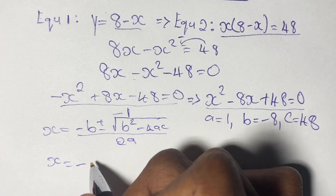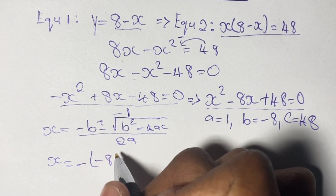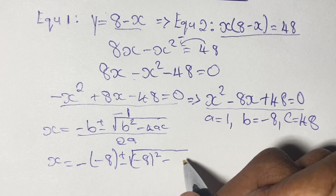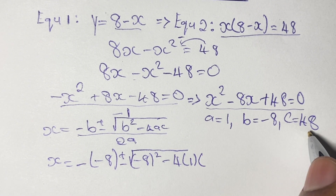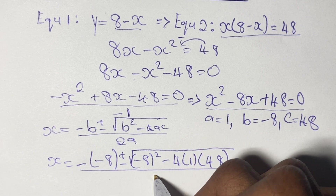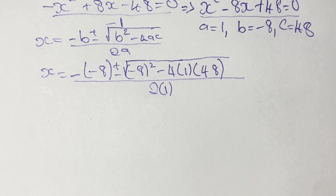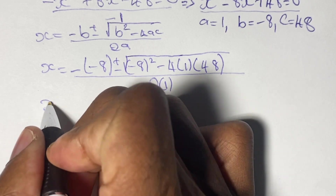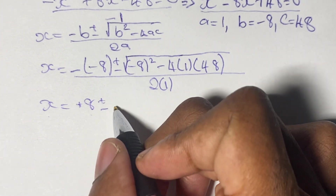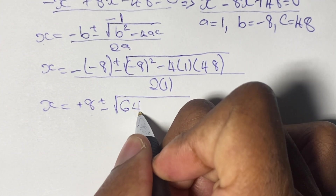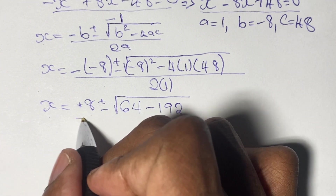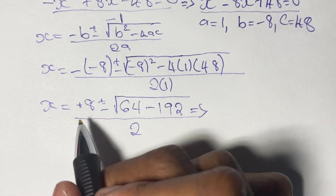Plugging in, we have x is equal to negative of (negative 8), plus or minus the square root of (negative 8) squared minus 4 times 1 times 48, all over 2 times 1. Simplifying: negative times negative gives us positive, so we have positive 8 plus or minus the square root of 64 minus 192, all divided by 2. That gives us 64 minus 192, which is negative 128.